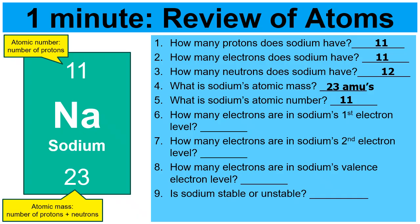How many electrons are in sodium's first level? That would be two, because that's all the first level can carry. The second level, that would be eight, because that's what the second level can carry. And the third level, which is sodium's outside level — its valence level — in this case only has one. Two plus eight plus one adds up to the eleven electrons.